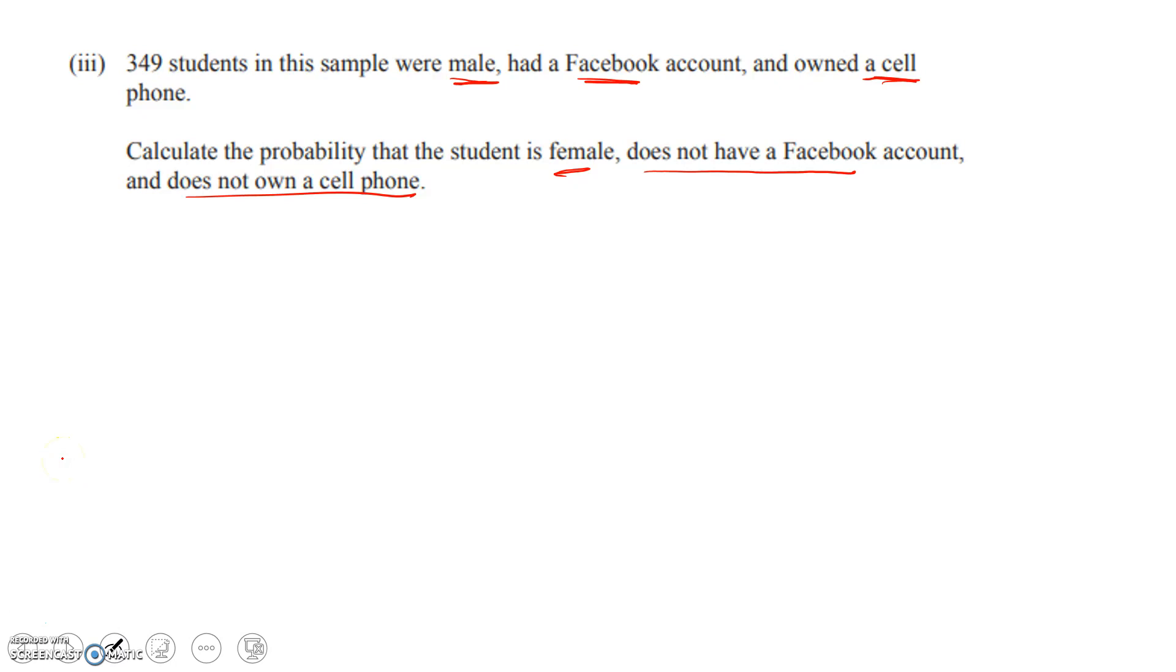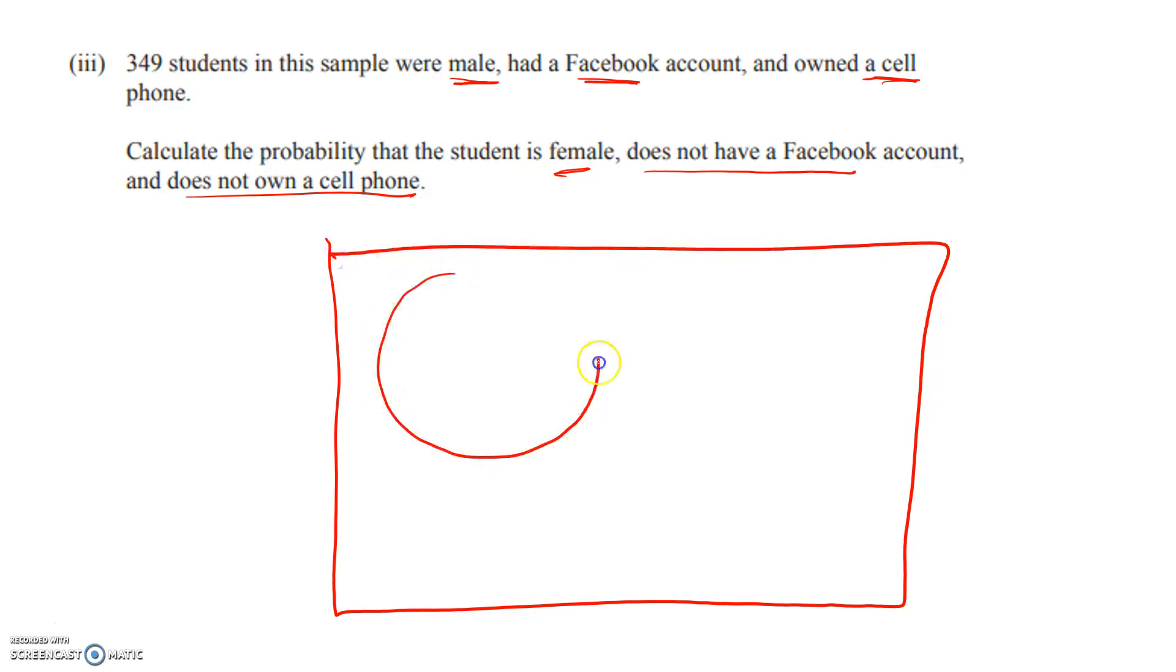You could do a table, you could do a big table with bits chopped in half, and that's fine if you like doing it that way, but I'm going to do a Venn diagram. So here's how mine's going to look. I'm going to have male here, Facebook here, and cell phone down here. Obviously it doesn't matter, but it might make your brain hurt a bit less if you do the same circles as me.